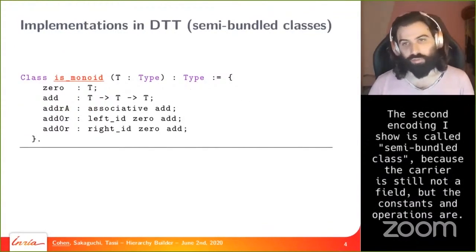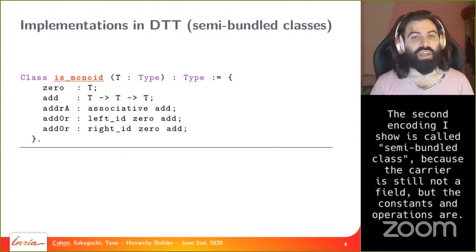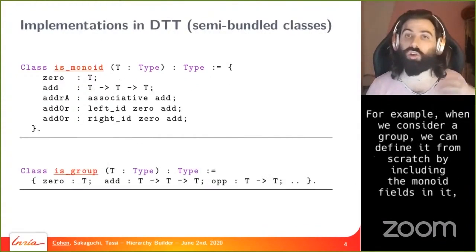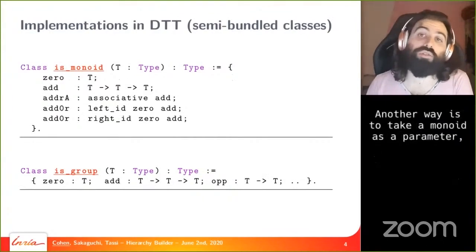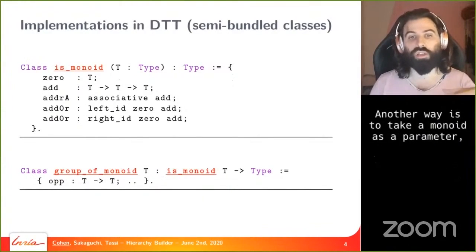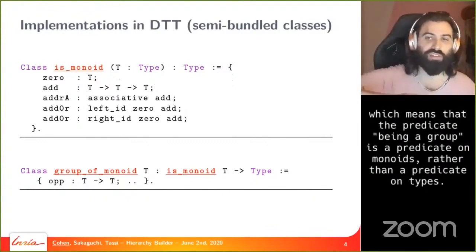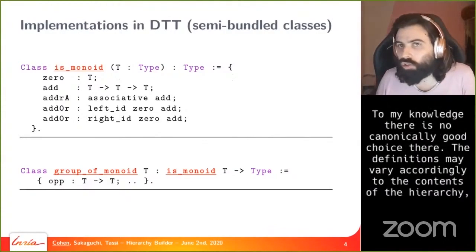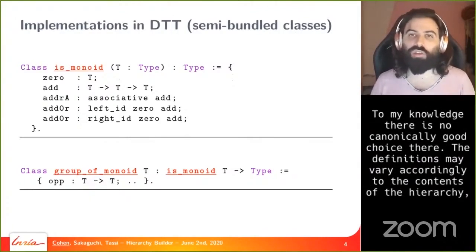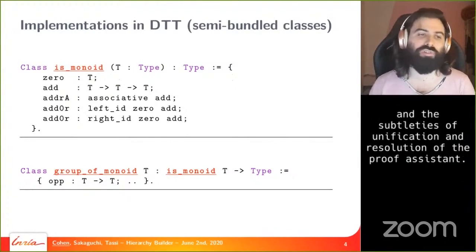The second encoding is called semi-bundled class because the carrier is still not a field, but the constants and operators are fields of the record. There are variations: for a group, you can define it from scratch including monoid fields, or represent the monoid as a parameter - making a group a predicate on monoids rather than on a type. There is no canonically good choice here; definitions may vary according to the hierarchy contents and subtleties of unification in the proof assistant.